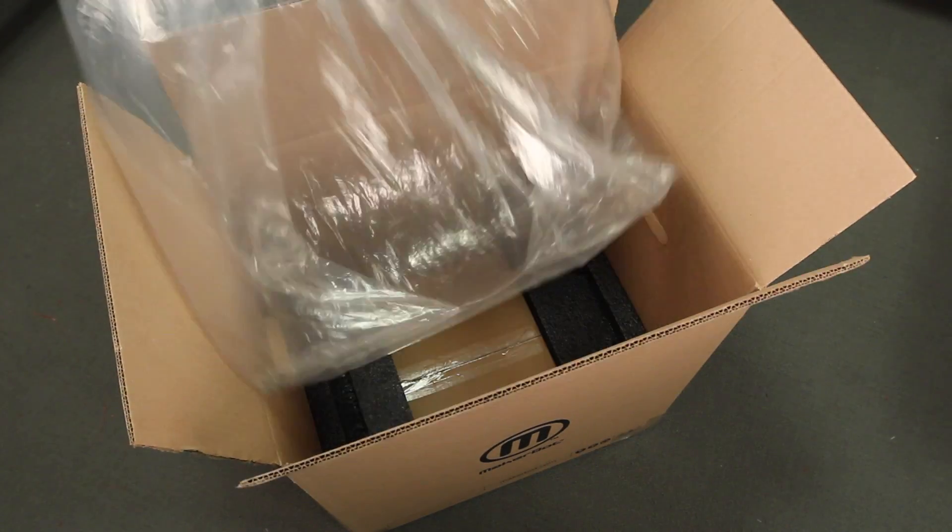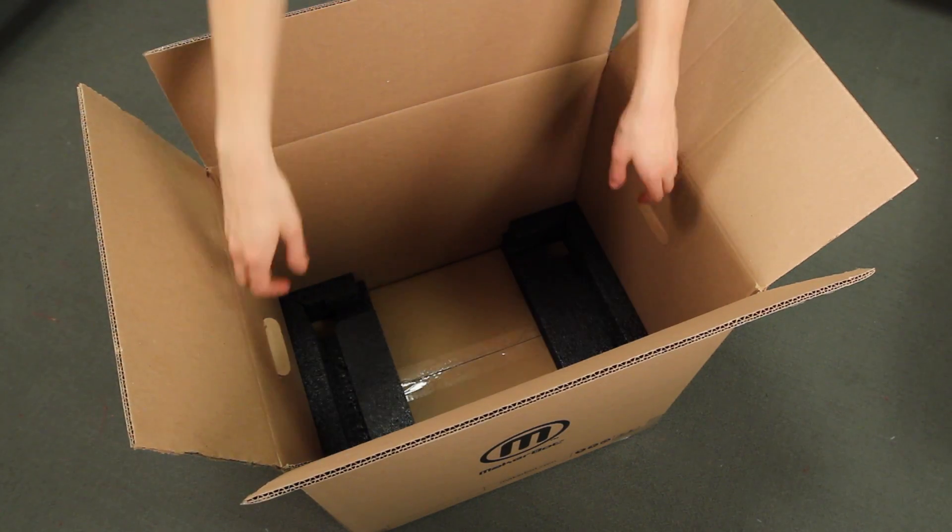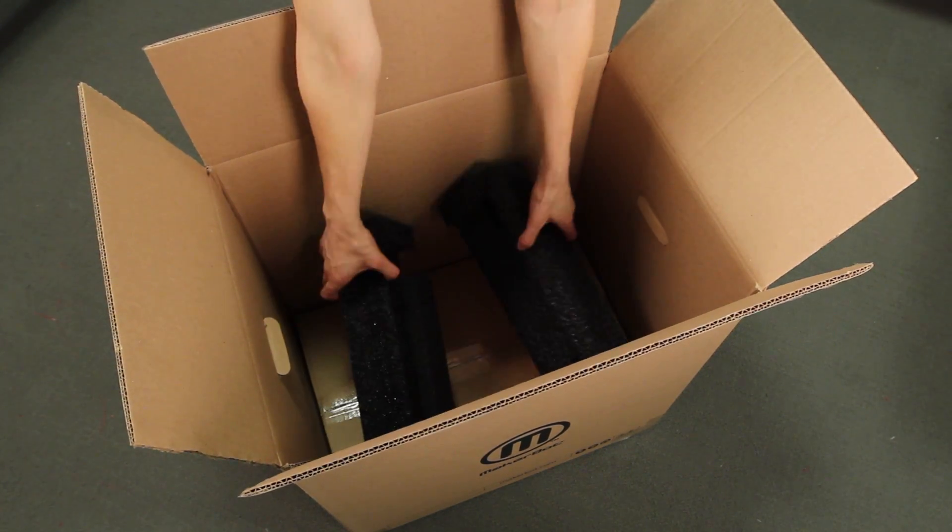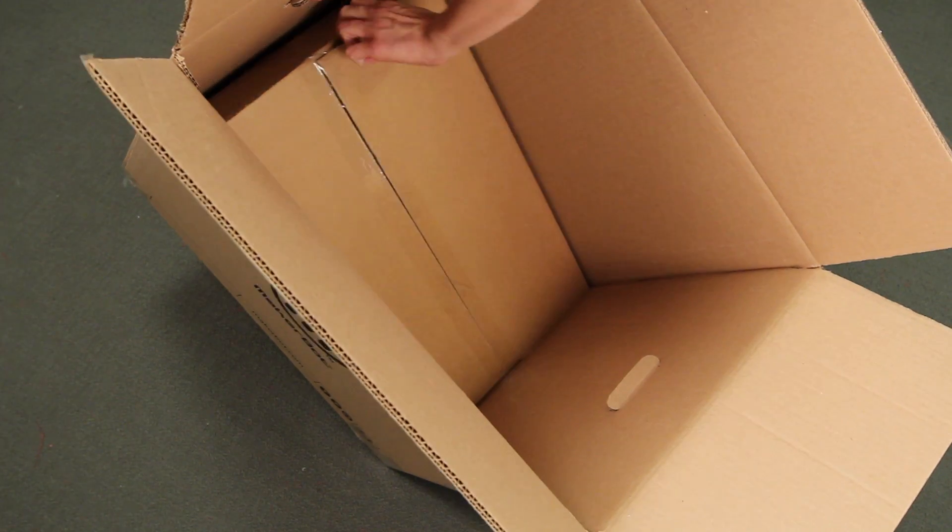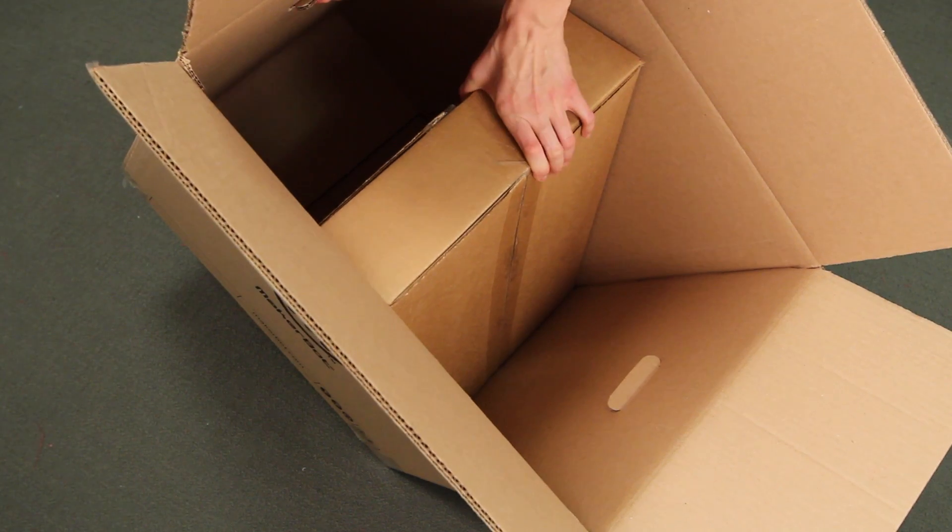Now you can remove the plastic bag and the two remaining protective foam pieces from the box. At the bottom of the shipping box, you'll find your accessory box. Take that out too.